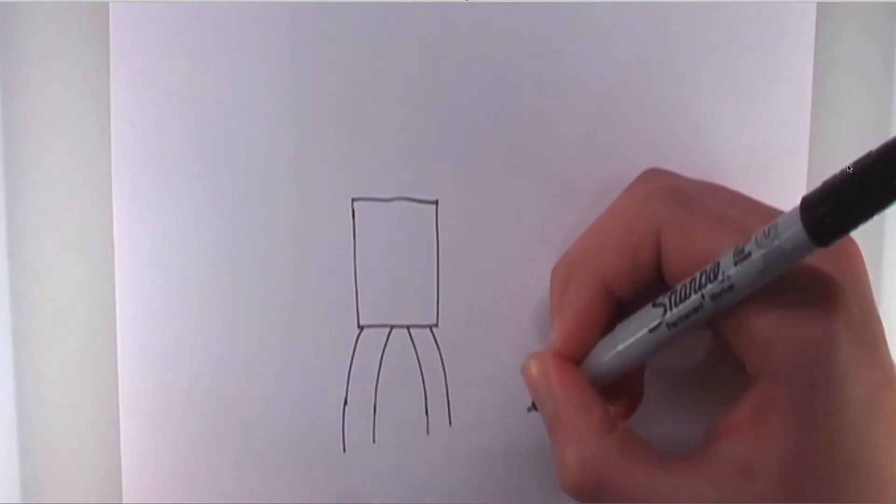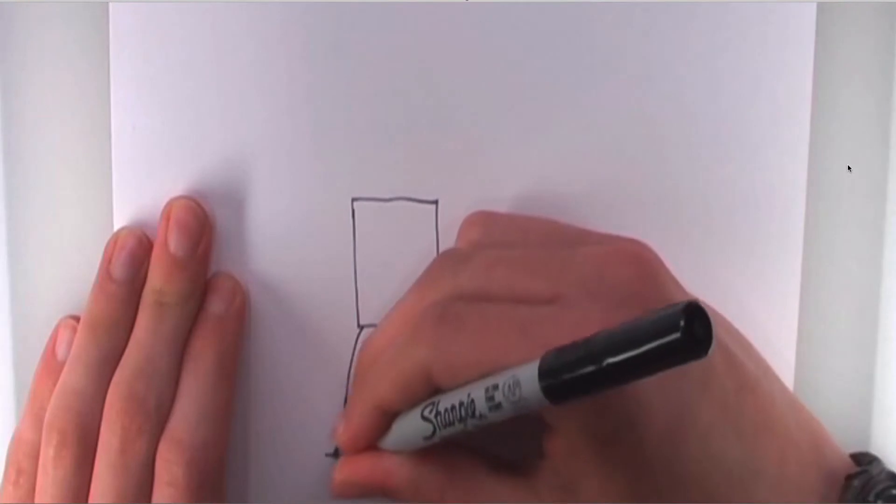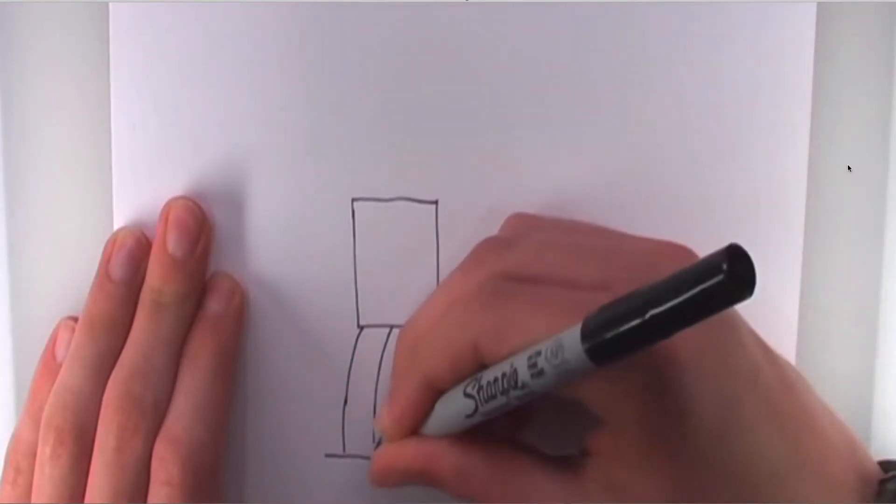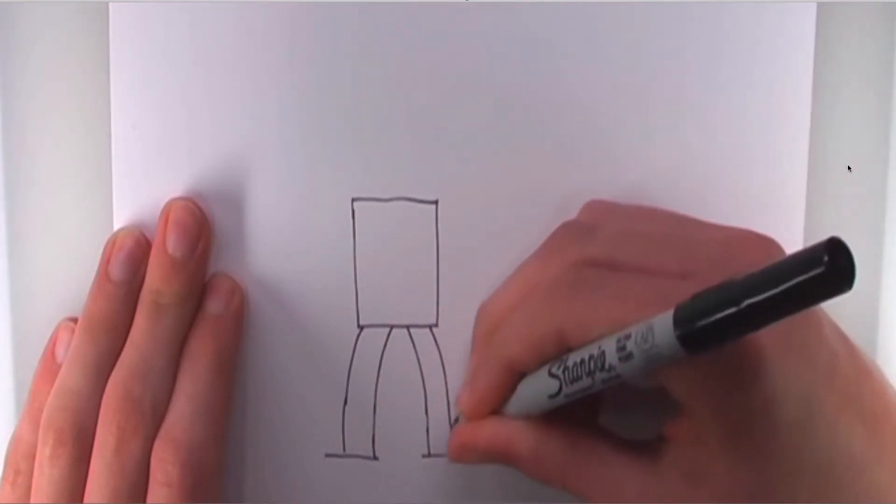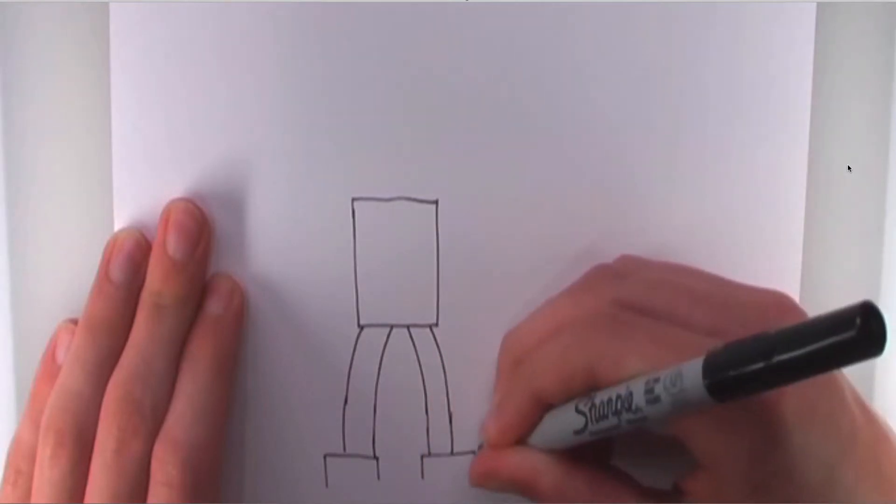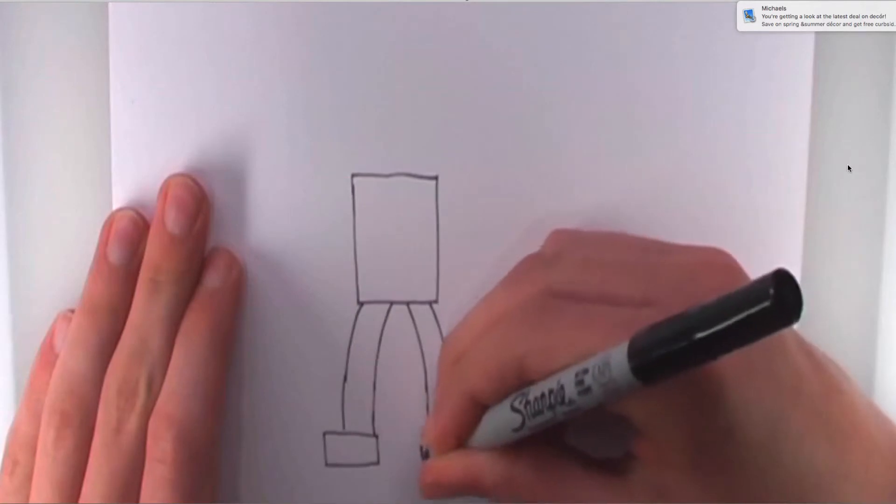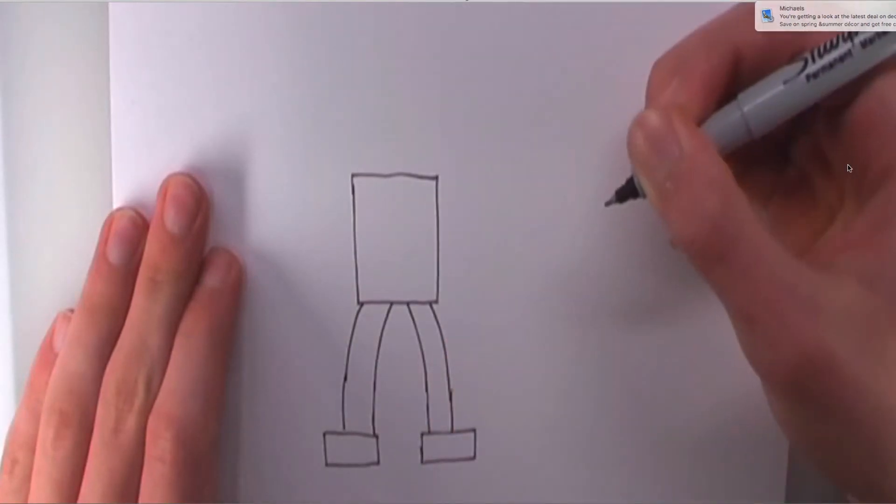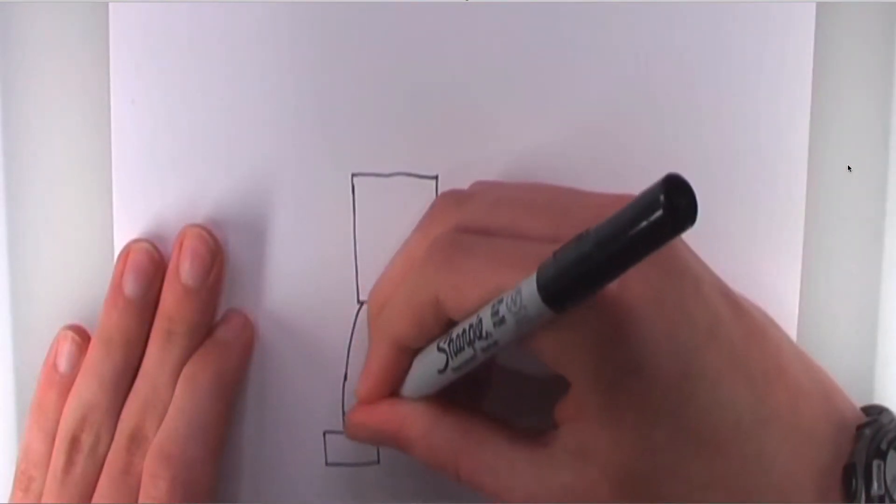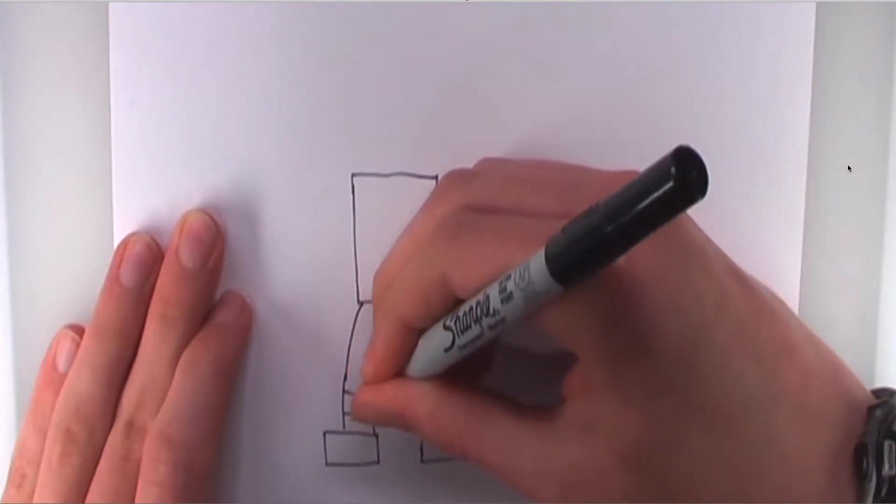We're going to do two more rectangles at the bottom, but these are going to be horizontal instead of vertical. So, I'm going to start with two lines. And then, I'm going to connect the legs. Then, I can do the lines. Come down from there. And then, the lines in the bottom.